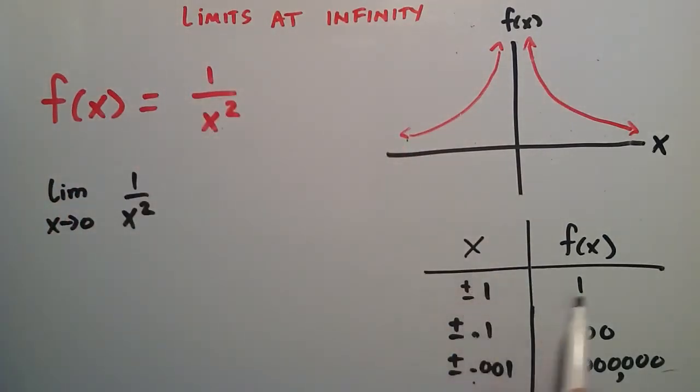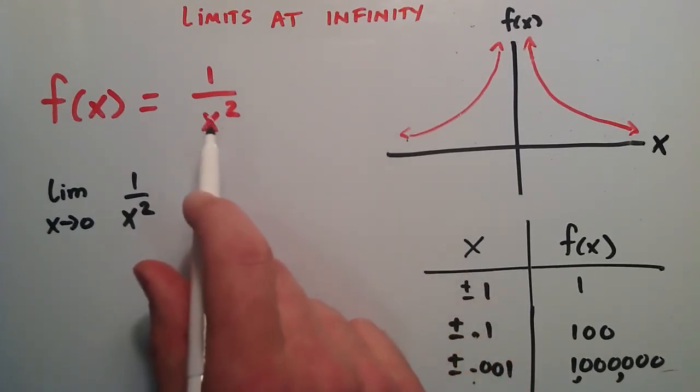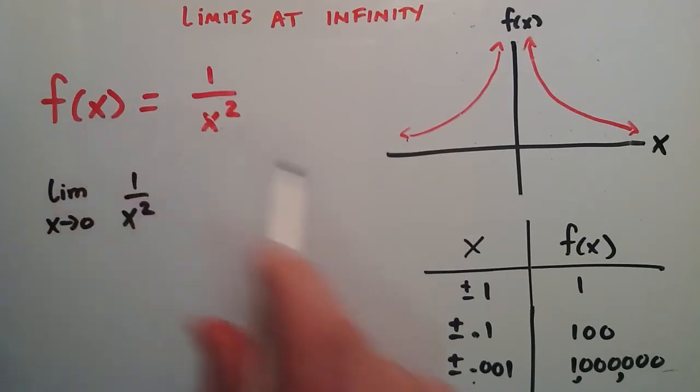If we look at this data and straddle the value 0, looking at f(±1), plugging in ±1 into this gives us a corresponding f(x) value of 1.